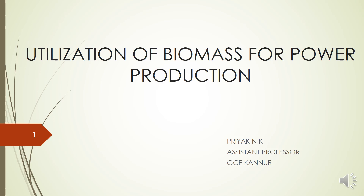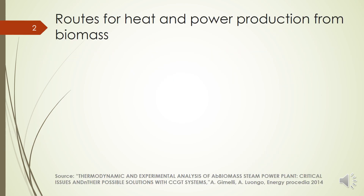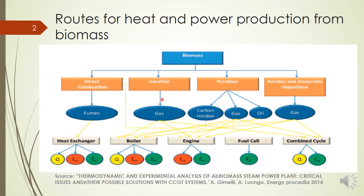Welcome back to the final session of bioenergy technologies. In this session, we will discuss the different possible routes available for heat and power production. This picture will explain that. We have biomass, and we have already discussed different routes — either we can go for direct combustion, and that heat can be utilized in a heat exchanger.